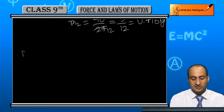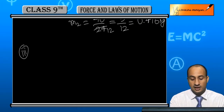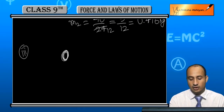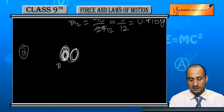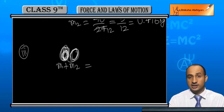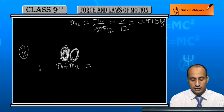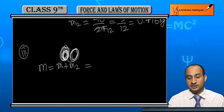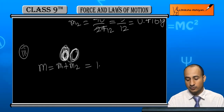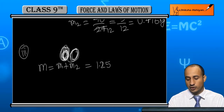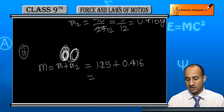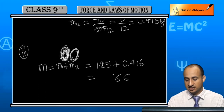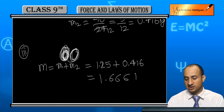Now in the third case, if mass m1 and mass m2 are added together, the new combined mass m equals m1 plus m2. That gives us 1.25 plus 0.416, so the total combined mass is 1.666 kilogram.